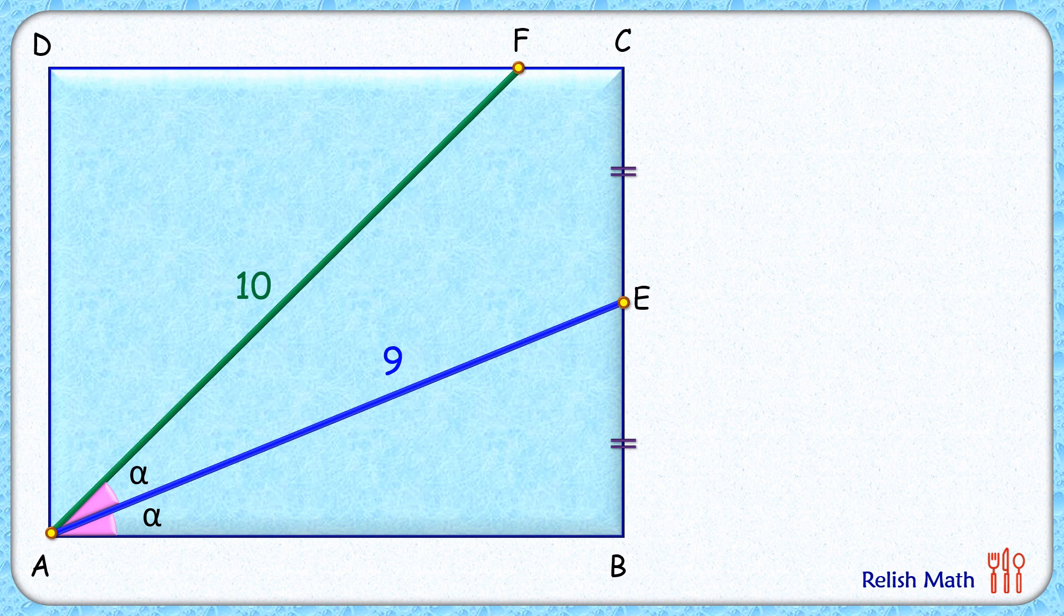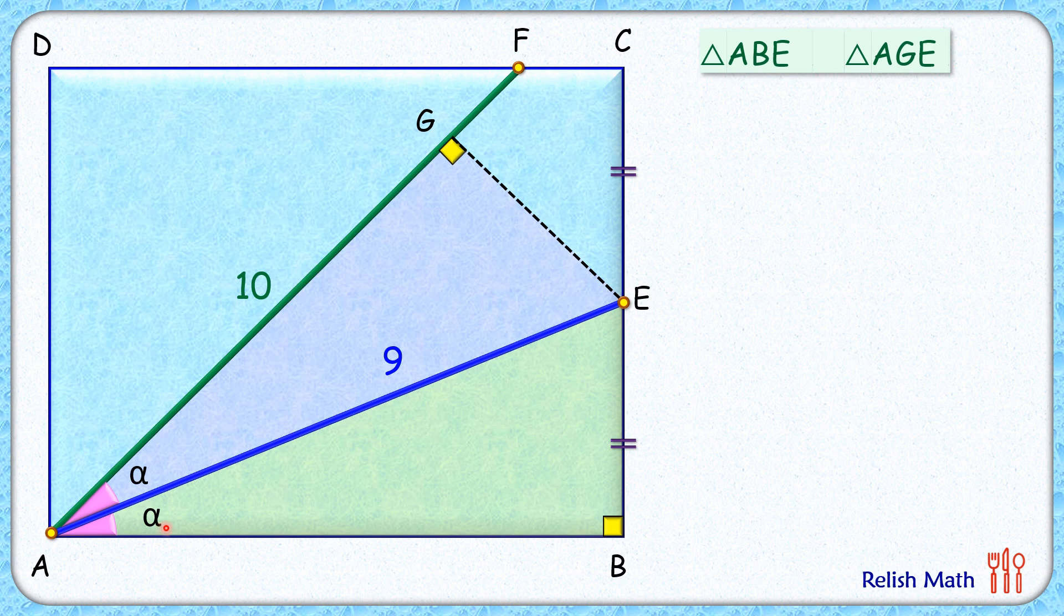Let's check the solution. From point E, let's draw a perpendicular on AF. Now let's have a look at triangle ABE and triangle AGE. Both have got angle alpha, 90 degrees, and side 9 centimeter.